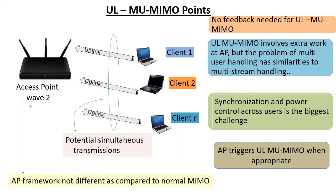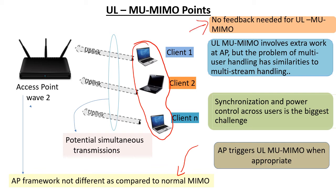To nail down a few key points: Uplink MU-MIMO is multiple user transmissions differing on the spatial stream axis but overlapping on the time-frequency axis. How do you distinguish or unravel those transmissions? Just like how we unravel MIMO spatial streams — use preambles that are orthogonal, and then use that information to unravel the multi-user transmissions. Remember, there is no feedback and no beamforming explicitly involved. The AP receiver takes care of the multi-stream or multi-user handling. This synchronization and power control framework is built into 11ax, since we have Uplink OFDMA, and everything is under the control of the AP — users cannot just do things as they wish.